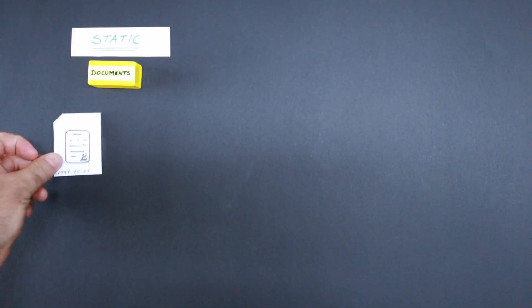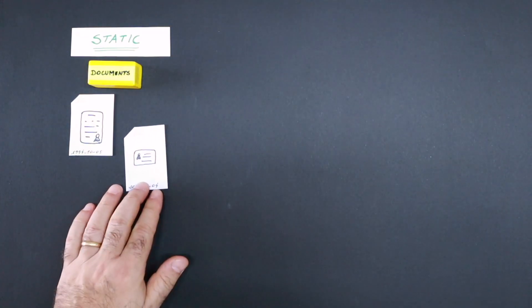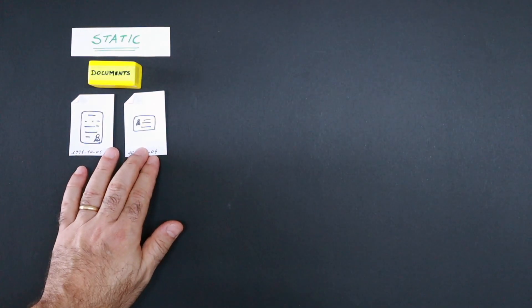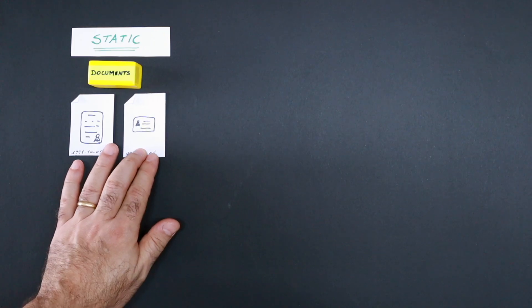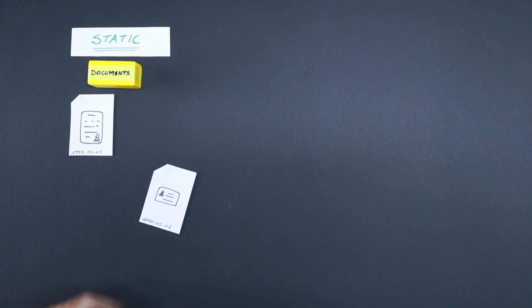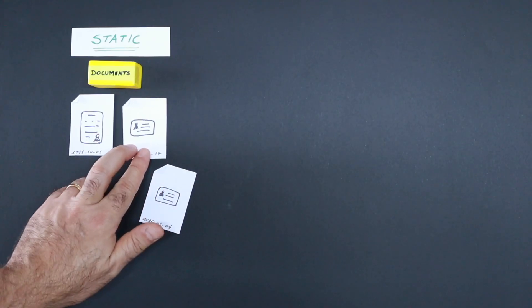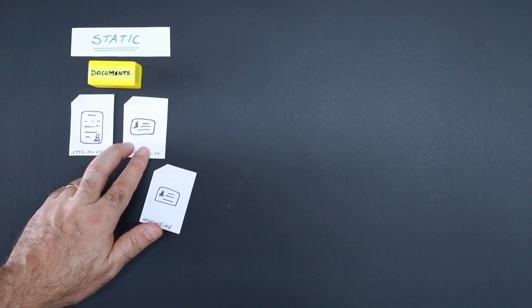A good example of static containers is your personal documents. You can have them in the same place — you need them, but not all the time, and they rarely change. It will only change if a document expires.